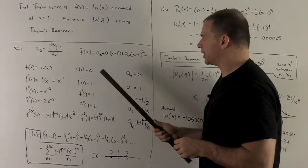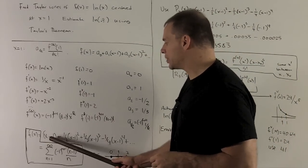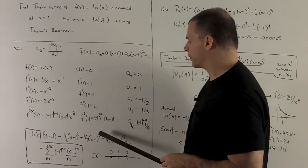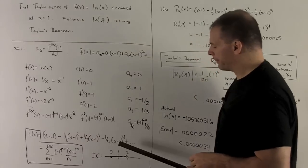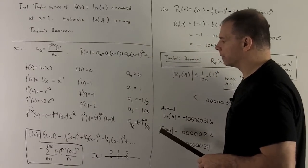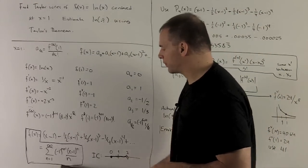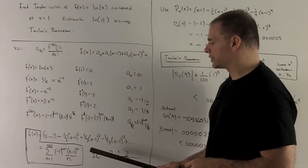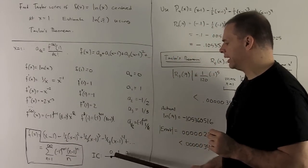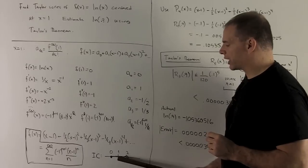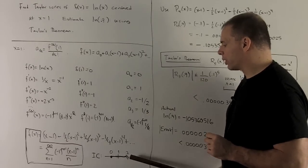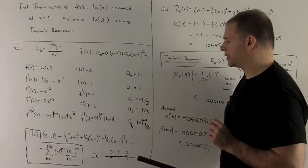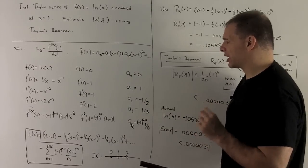We write out the first few terms of our series. It's going to look like x minus 1 minus a half x minus 1 squared plus a third x minus 1 third minus a quarter x minus 1 raised to the fourth, and so on. I can put it in closed form as we have here, and then we'll note the interval of convergence for this is going to be 0 to 2, so we're centered at 1, and then we'll include 0, but we'll throw away the 2. So that's my Taylor series for natural log of x centered at 1.